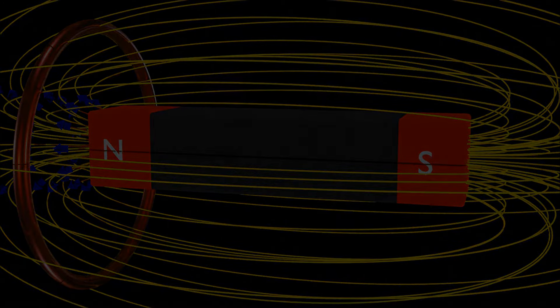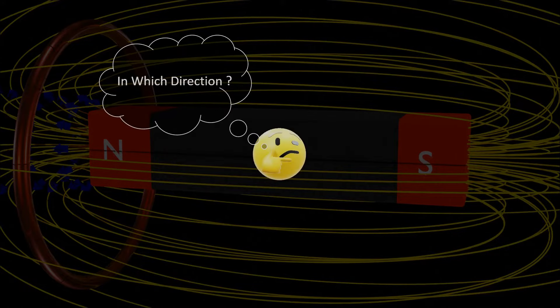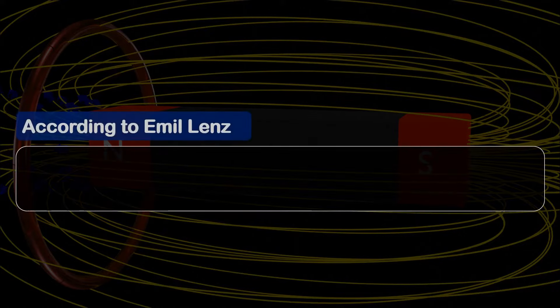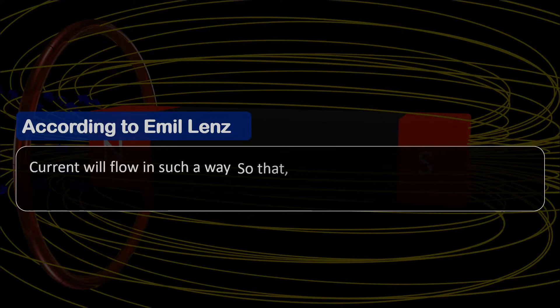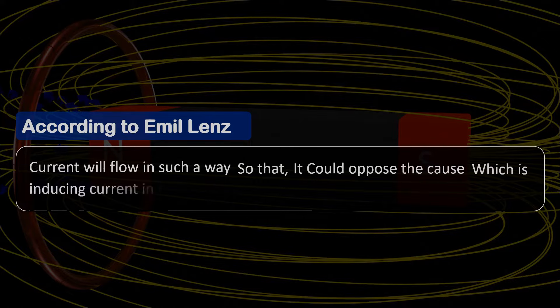But the question is: current flows in which direction? According to Emil Lenz, current will flow in such a way so that it could oppose the cause which is inducing current in the coil.